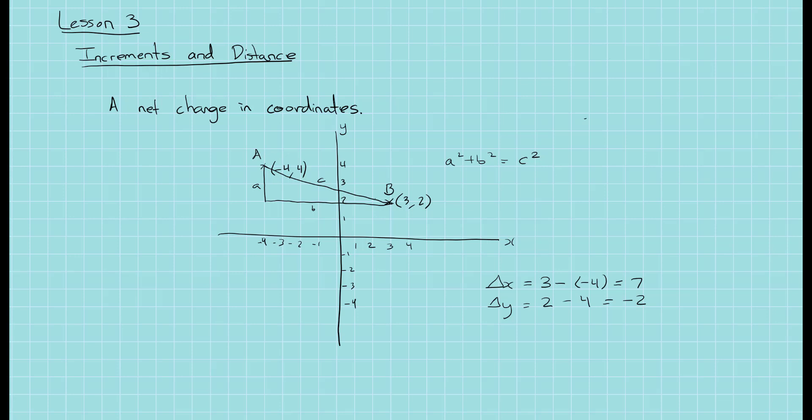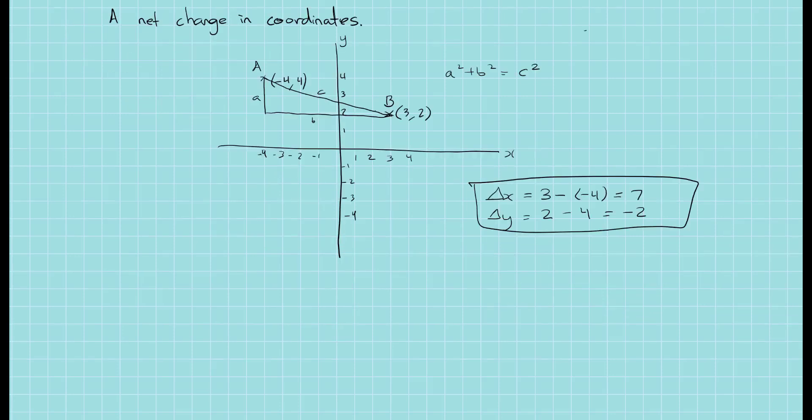The distances for A and B are actually these increments, delta x and delta y. A is minus 2, and B is 7. And it doesn't matter about the signs when we're using the formula for Pythagoras theorem, because the squares make the signs of no consequence.